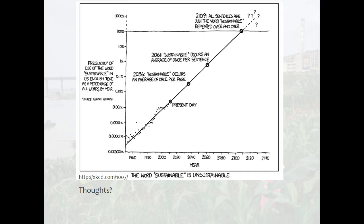Here's another cartoon. Go ahead and press pause to read through it and see what you think it means. This one is very similar in theme to the previous one, and it's meant to be funny. What it's showing is that as the years progress — from 1960 projecting to 2140 — the y-axis tracks the frequency of use of the word 'sustainable.' It's saying that as we go through time, people use the word sustainable more and more, projecting that by about 2100, all sentences are just the word sustainable repeated over and over again.